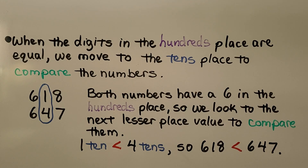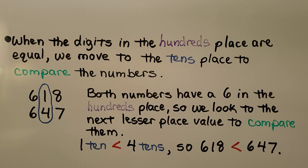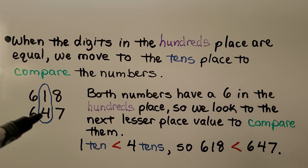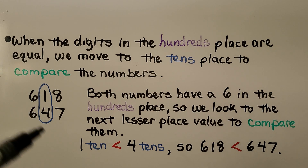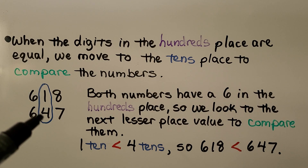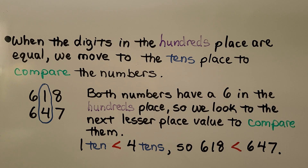When the digits in the hundreds place are equal, we move to the tens place to compare the numbers. Both numbers here have a 6 in the hundreds place, so we look to the next lesser place value. We look at their tens place, and 1 ten is less than 4 tens, so 618 is less than 647.